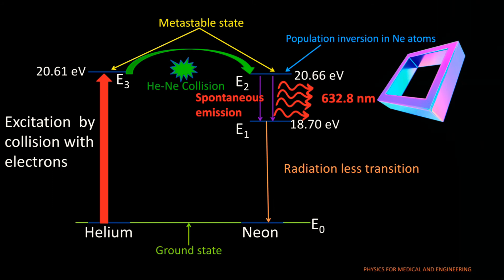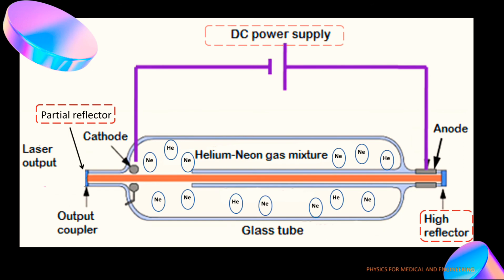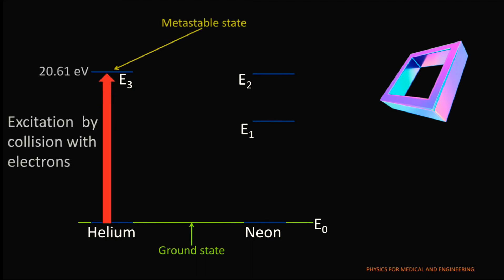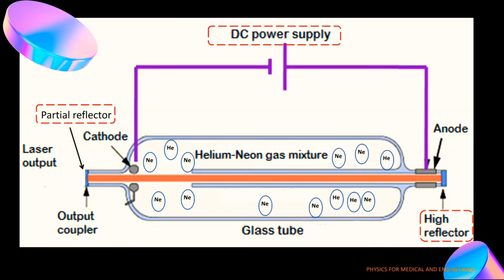This is the energy level diagram for helium and neon atoms. When the energy from the pumping source is applied to the helium neon gas mixture, then some of the energy is absorbed by the helium atoms. In other words, we can say that helium atoms achieve an excited state which is a metastable state.